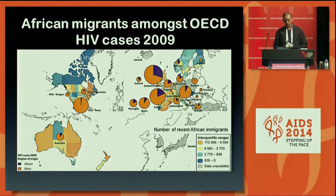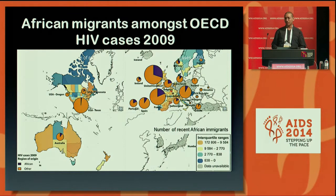In Australia, African migration is not on a large scale compared to some other countries, but nevertheless there is still an appreciable presence of African people within the HIV epidemic.